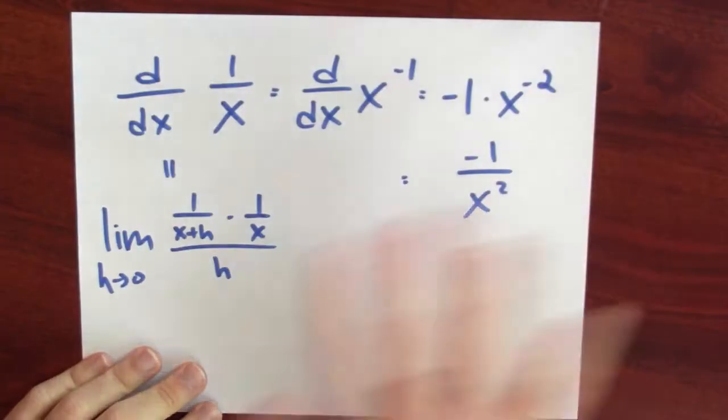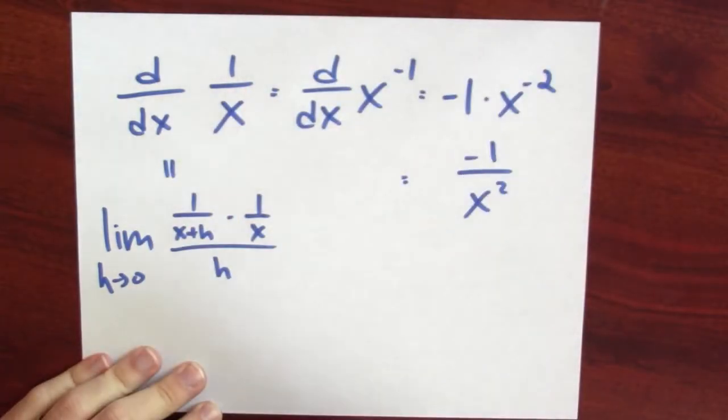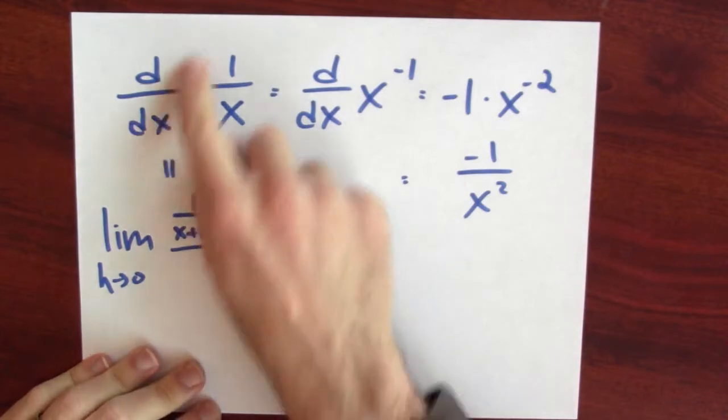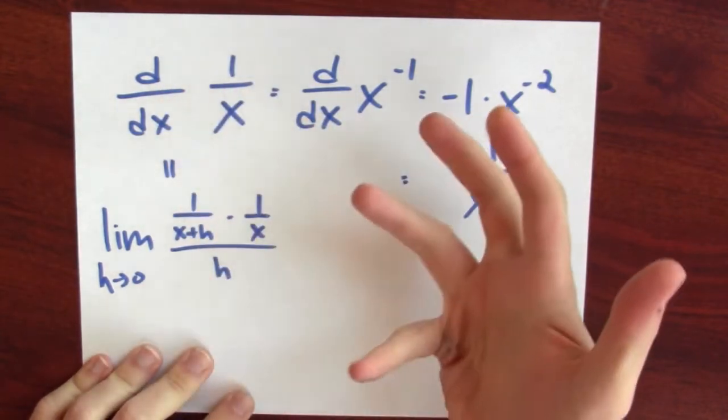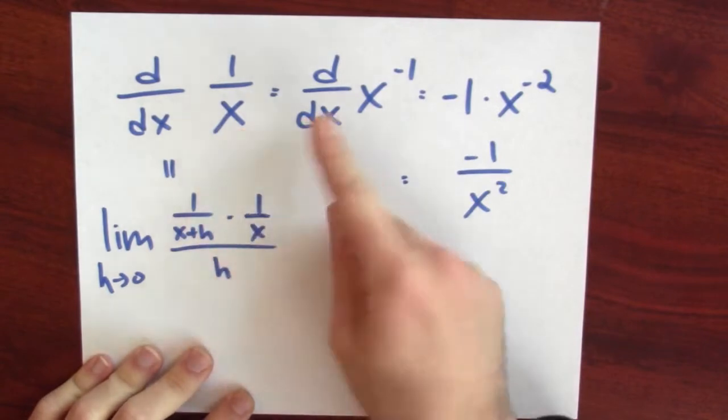But we haven't actually seen a proof of the quotient rule. Why should the derivative of a quotient be governed by that crazy looking formula? One way to justify this formula is to combine the chain rule and the product rule. We're going to build up to the quotient rule, starting with the simplest possible case: what's the derivative of 1 over x?